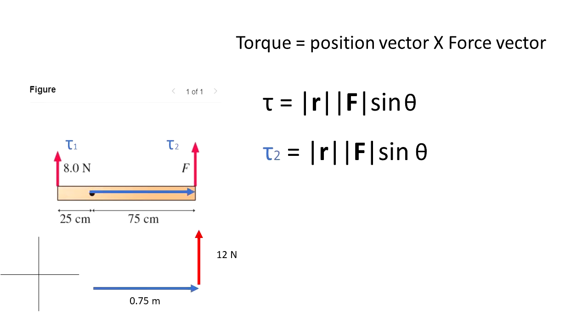Now we are going to find torque 2. The position vector is defined from the black dot to the place where the force is applied. So you can see that there is a blue arrow from that point to the edge. And that's 0.75 meters. And the force is perpendicular, 12 newtons, in the y direction.